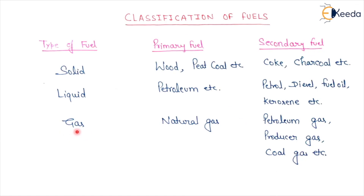For gaseous secondary fuels, there are petroleum gas, producer gas, coal gas, etc. So my friends, in this lecture I have covered the definition of fuel — what fuel really is — and the classification of fuels. In the next lecture, we will study combustion of fuel, because through combustion, fuel releases energy, and that energy is utilized to generate power in power plants, whether it is a gas turbine power plant or a thermal power plant. In the next video, I will cover combustion of fuel. Thanks for watching this video and have a good day.